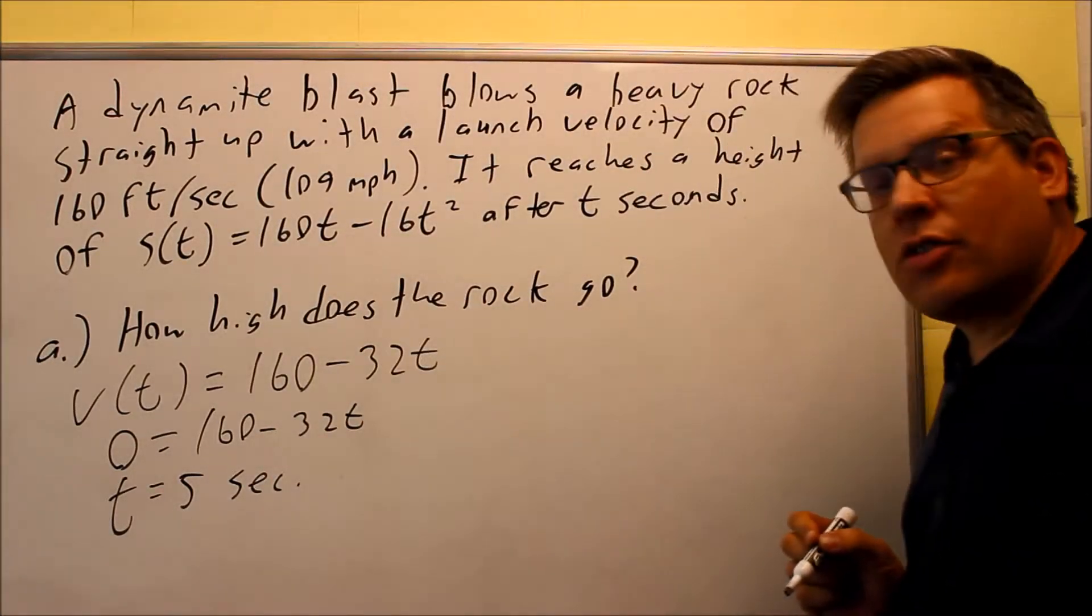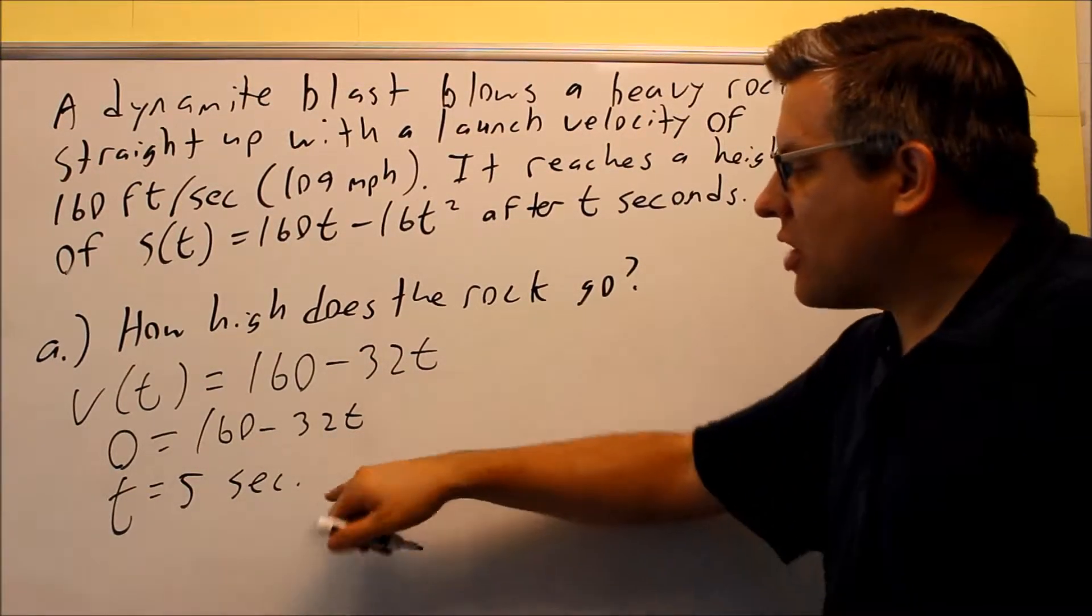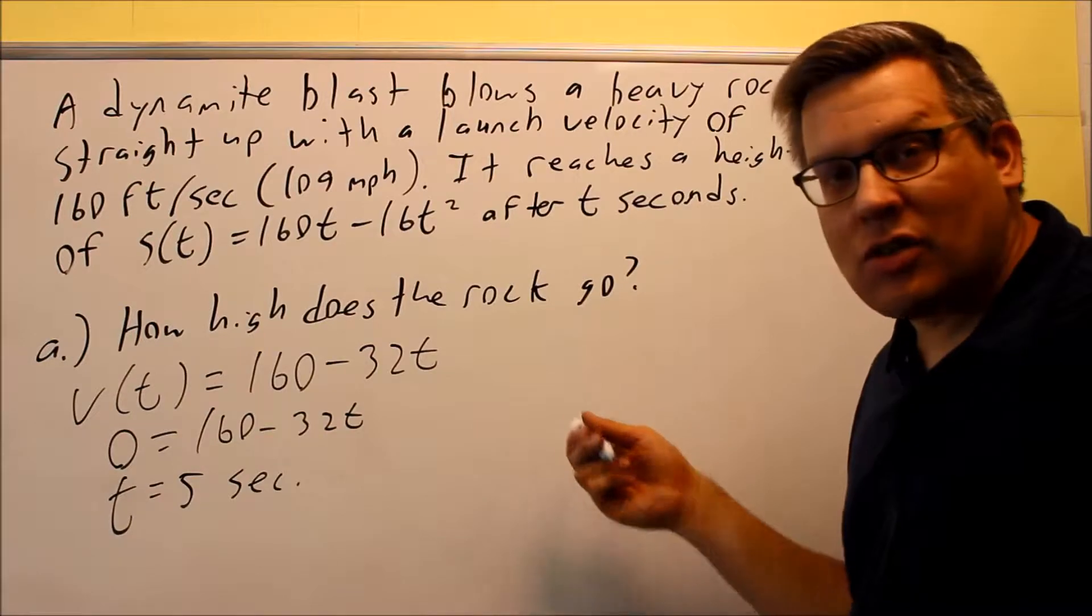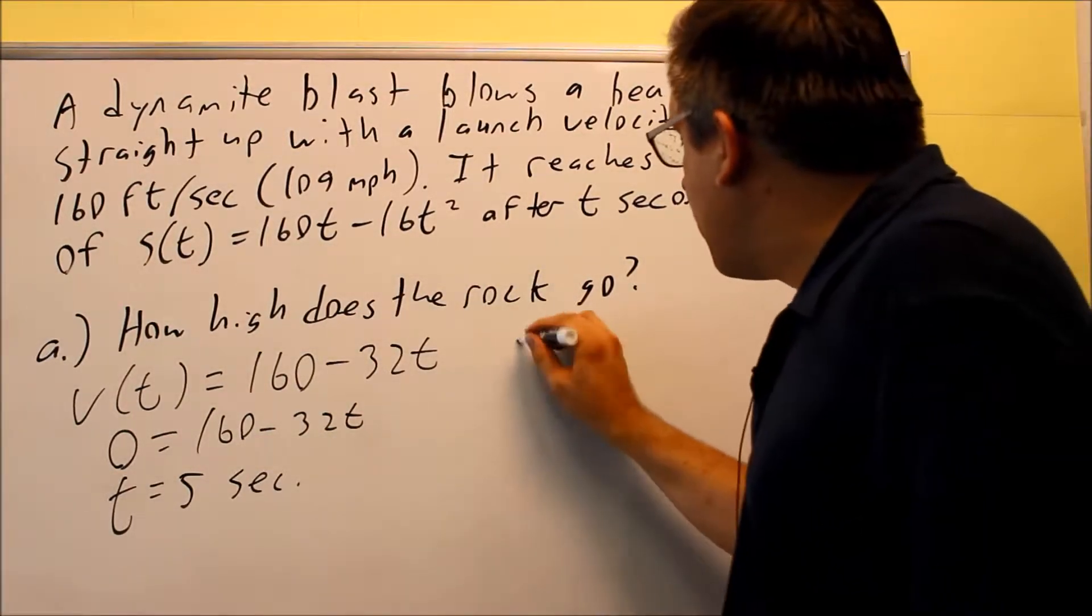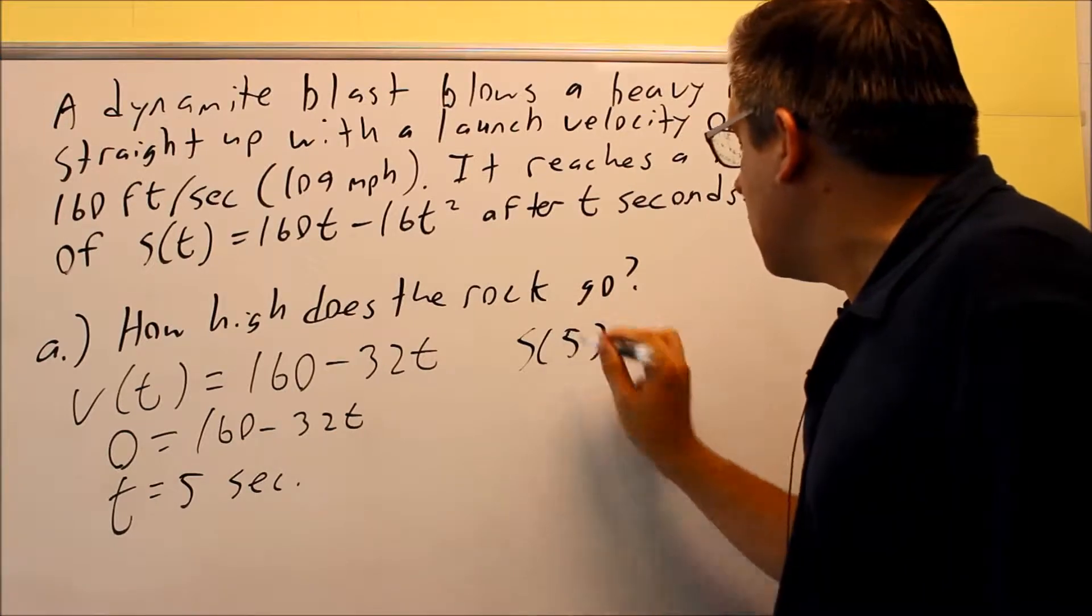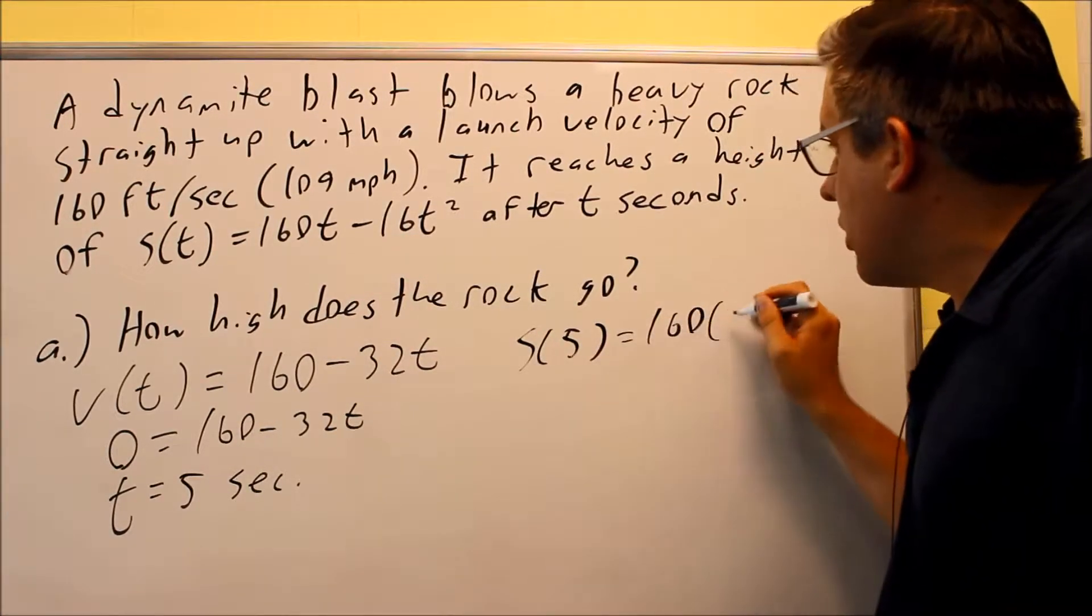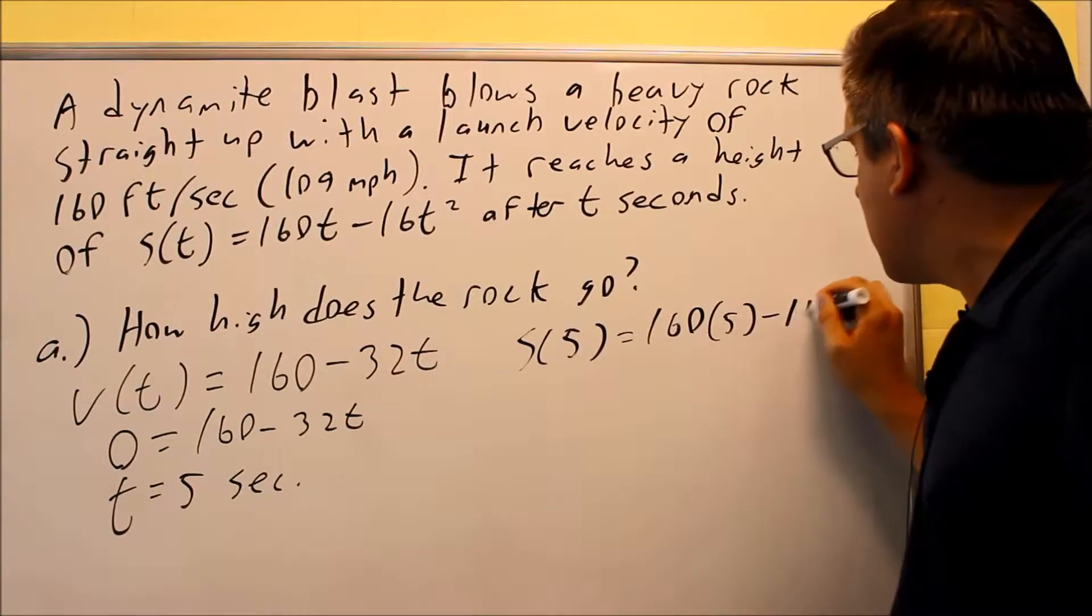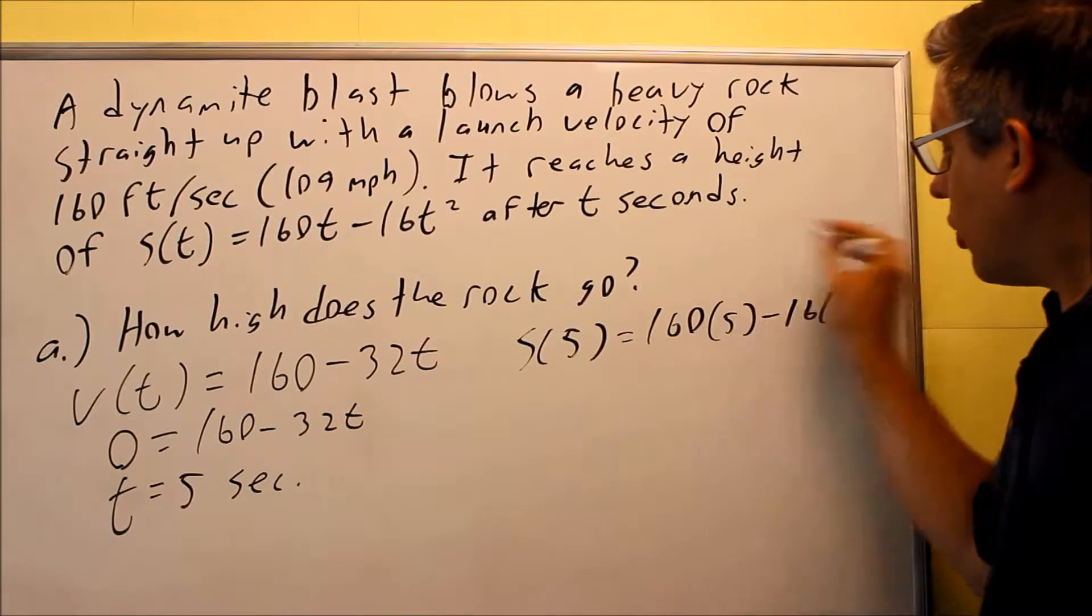Now 5 seconds is not going to be the answer because it's not asking for the time, it's asking for how high does the rock go. So I need to put 5 seconds back into the original one and that's going to tell me how high it goes. So 160 times 5 minus 16 times 5 squared, that's what I want to work out.